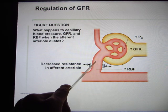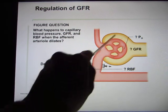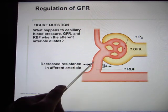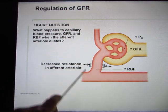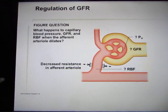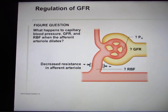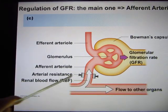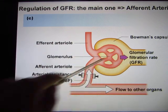When resistance decreases, more blood will go there and GFR increases. So you can change the filtration by regulating the afferent arteriole. You can also do the efferent arteriole, but it's more powerful to regulate the afferent arteriole. If you constrict the afferent arteriole, less blood goes there and GFR decreases.